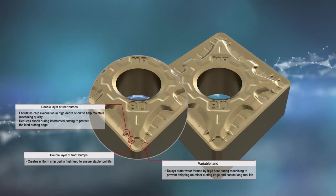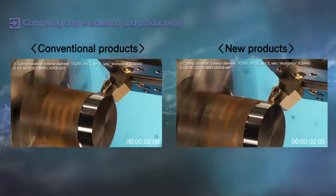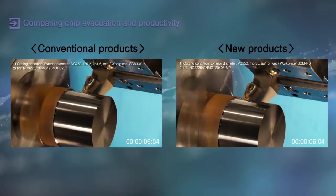A variable land design delays crater wear due to the high heat generated during machining by preventing edge chipping in the minor cutting edge and thus ensuring longer tool life.